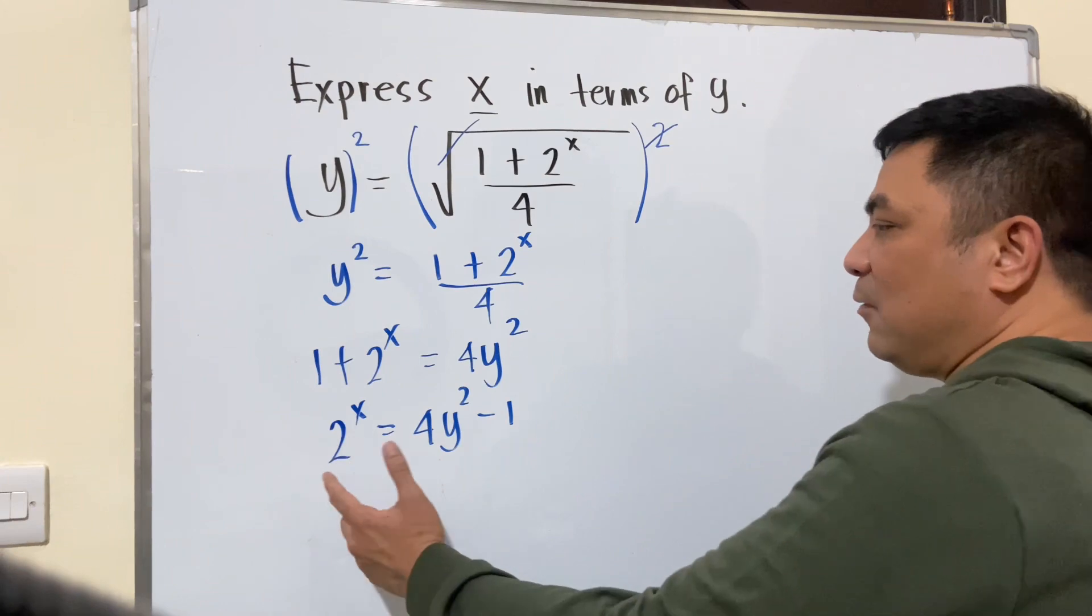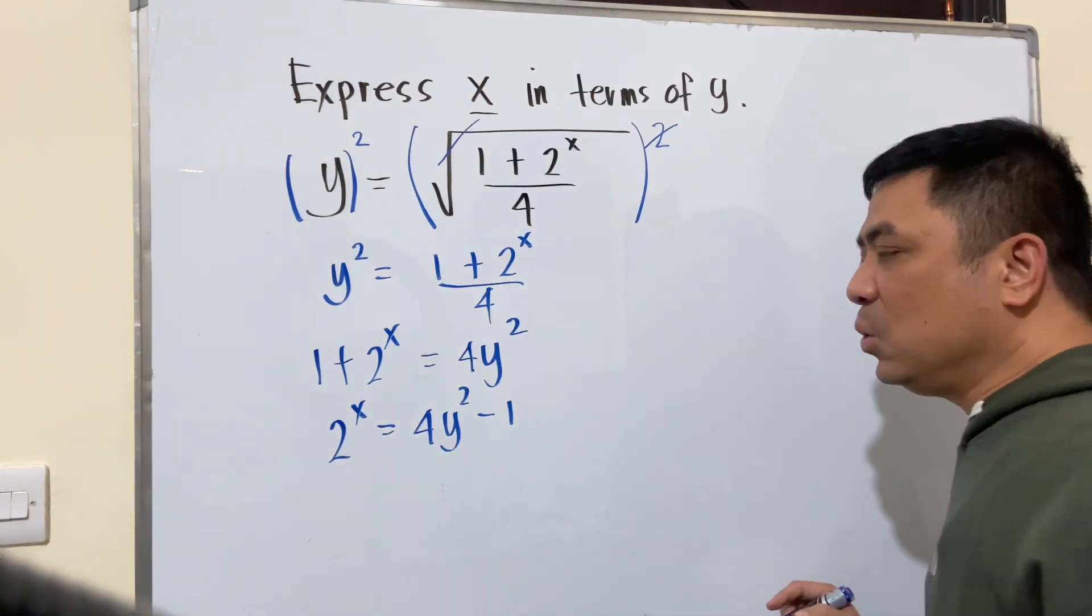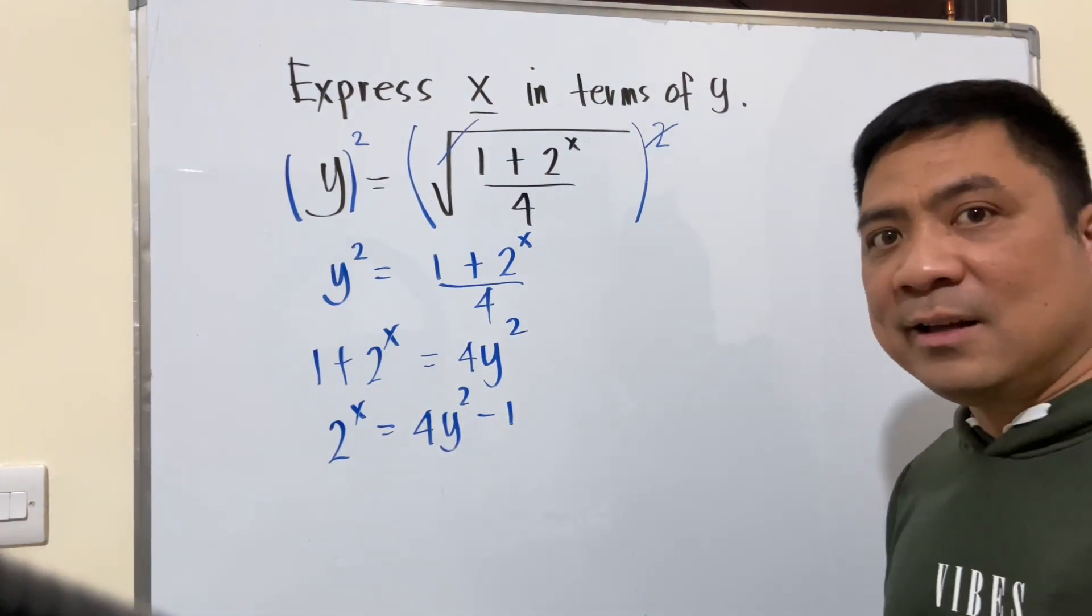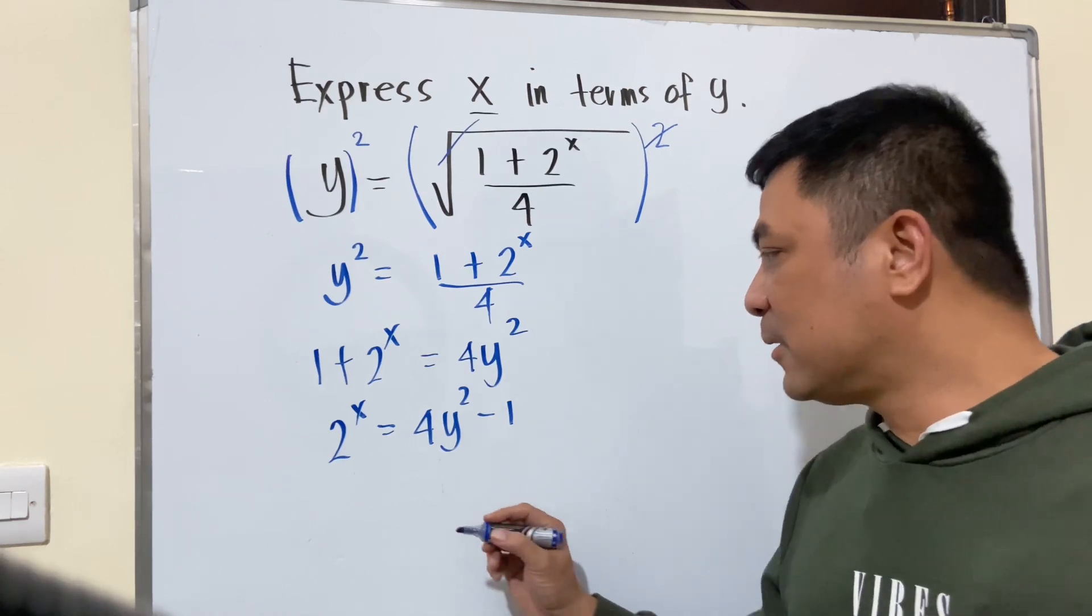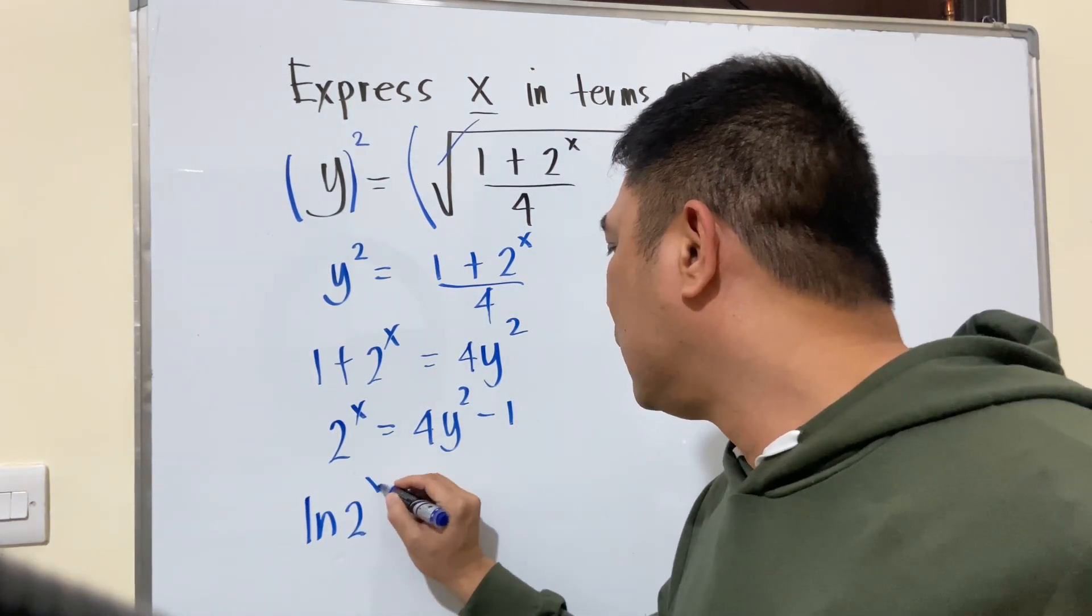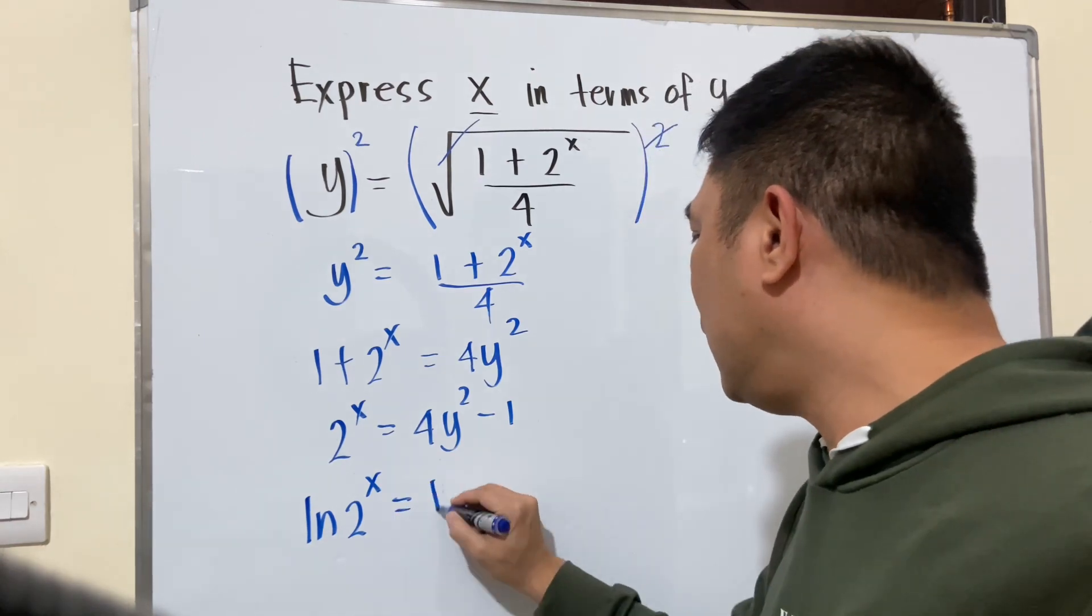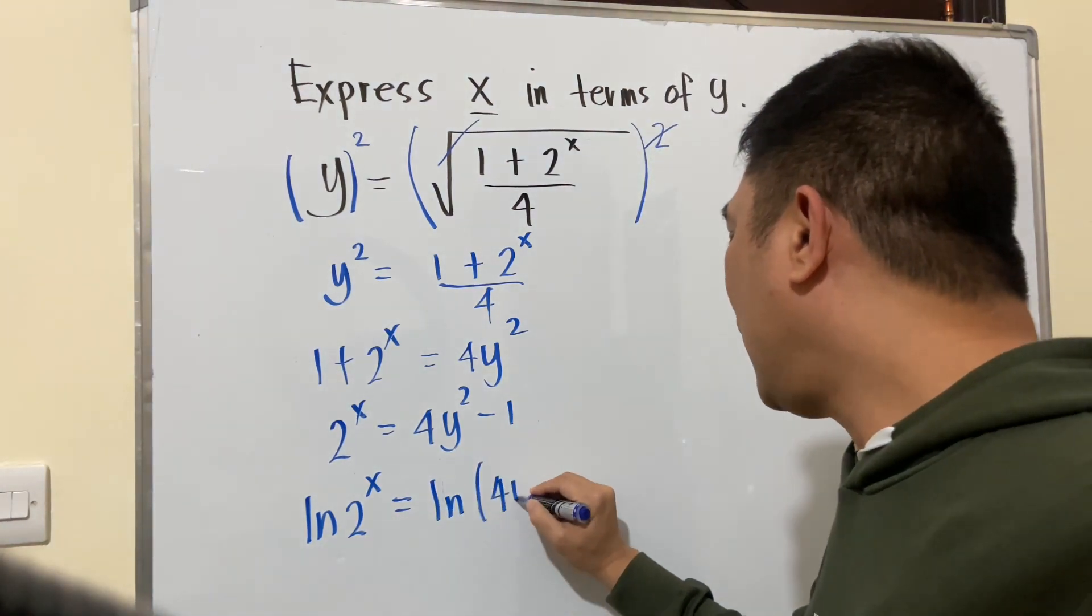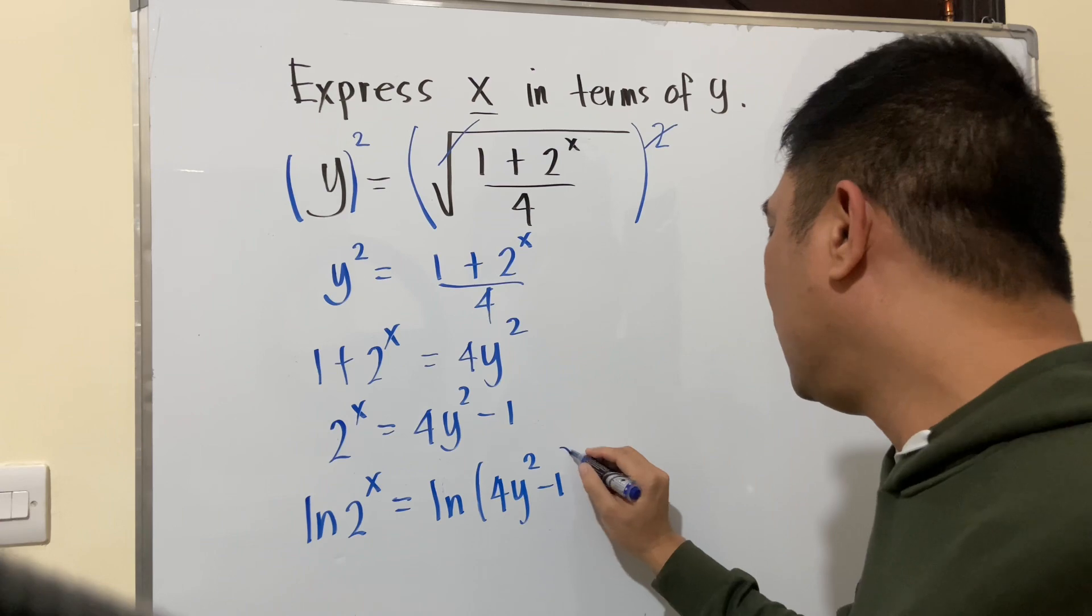If you will take the natural logarithms of both sides, what's left now is ln 2 raised to x equals ln of 4y squared minus 1.